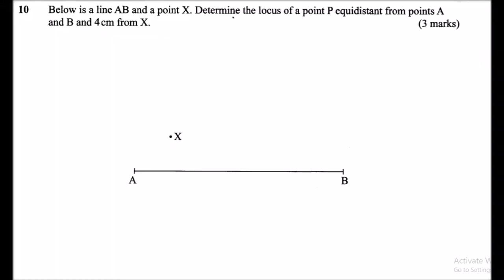Question number 10: we are told below is a line AB and a point X. Determine the location of a point P equidistant from points A and B, and 4 centimeters from X.